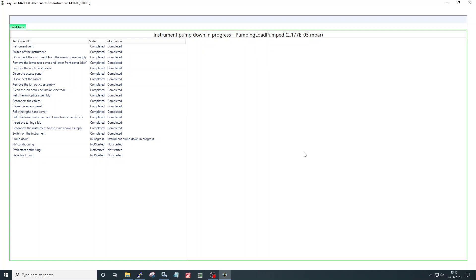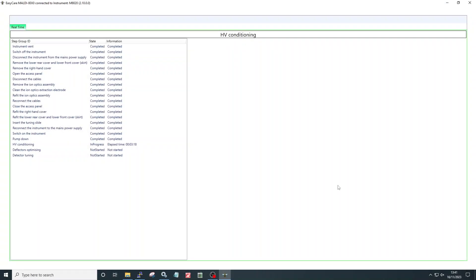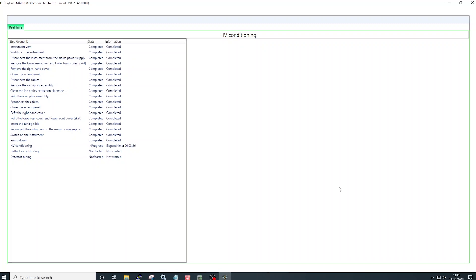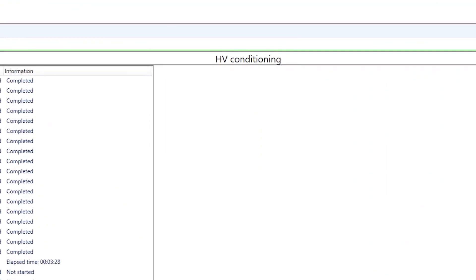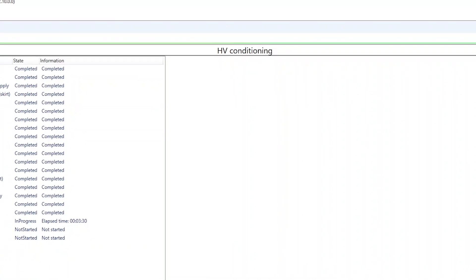During the next stages of the wizard, during HV conditioning, deflector optimization and detector tuning, there is no user input required. Once the instrument is fully pumped down, the wizard will automatically start HV conditioning. This stage will take around 45 minutes. The wizard will display HV conditioning and there is no user action required.